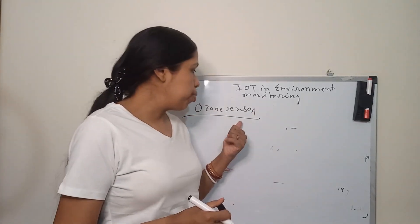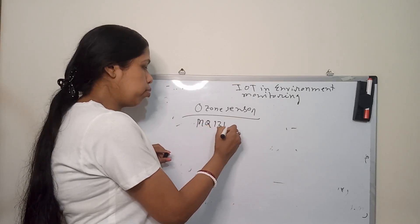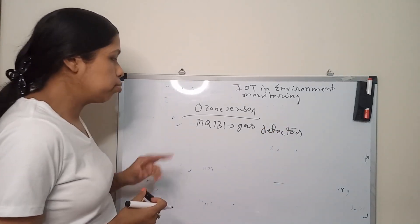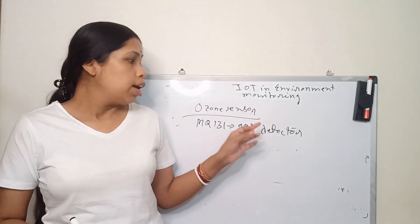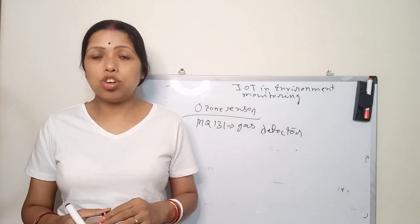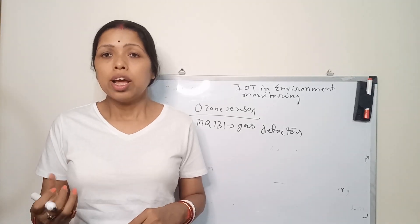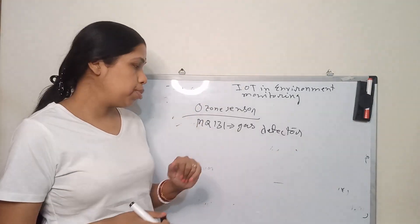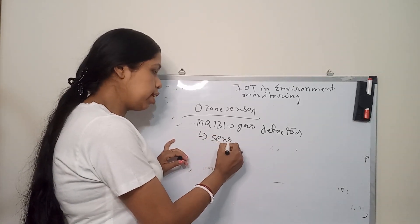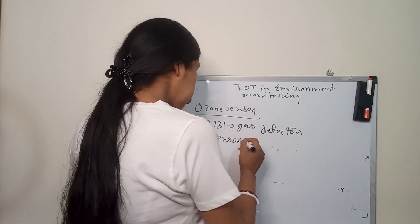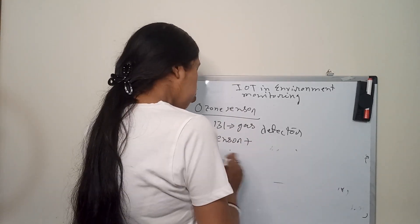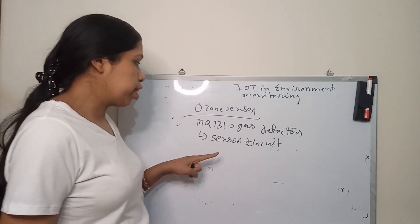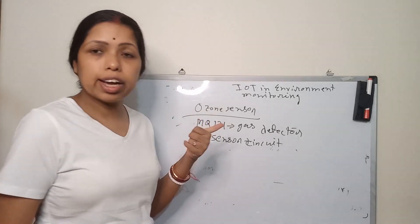The ozone sensor — the MQ-131 gas detector. This sensor is mainly used for the detection of the ozone layer, which can be detected from the atmosphere. The MQ-131 gas sensor consists of a sensor circuit — a sensor plus driver circuit — by which different kinds of gas like the ozone layer can be detected from the environment.